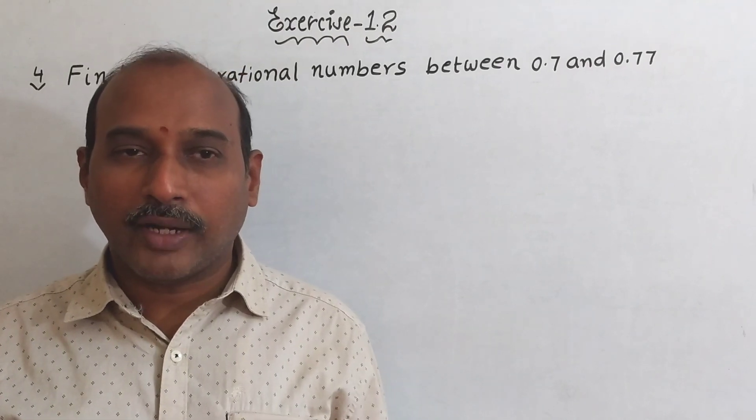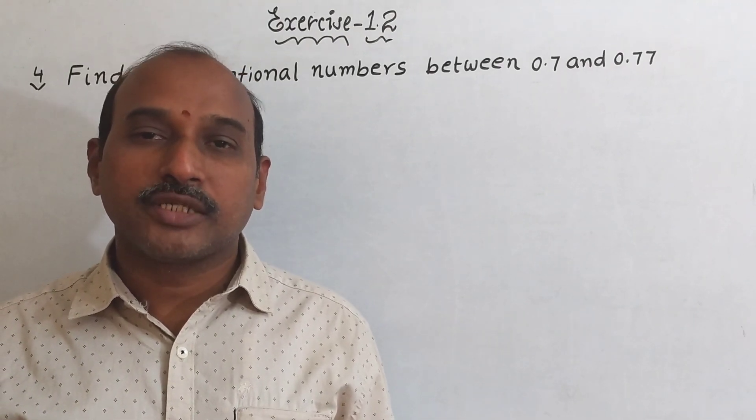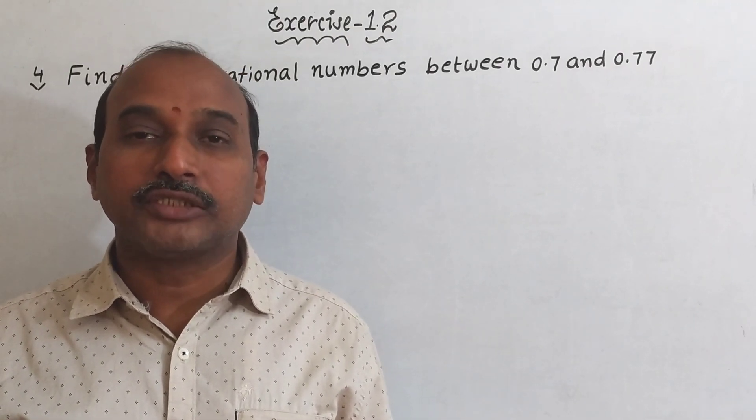Exercise 1.2, question number 4: Find two irrational numbers between 0.7 and 0.77.